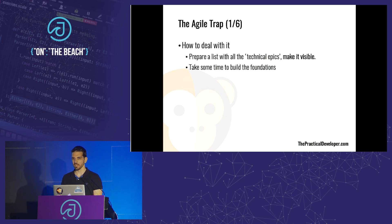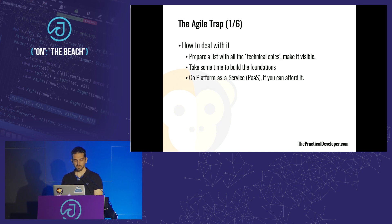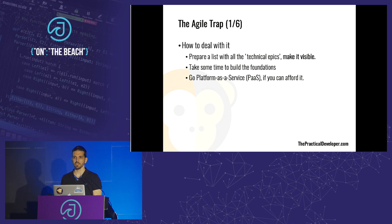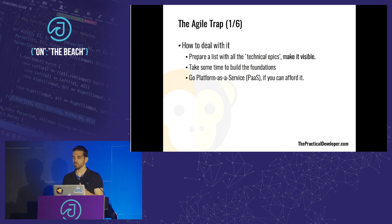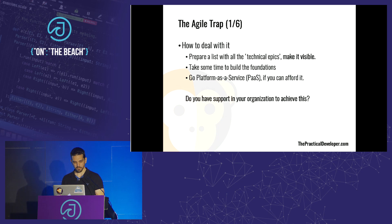I recommend doing something like a sprint zero — two to four weeks — to build not everything, but just the minimum foundations you're going to need. That's great because then everybody will be able to deploy and check logs. If you can afford it, consider starting with a platform as a service instead of infrastructure as a service — things like Google App Engine, Heroku, or Pivotal Cloud Foundry — so you just push your code there and handle less infrastructure yourself.